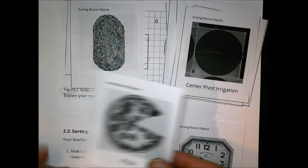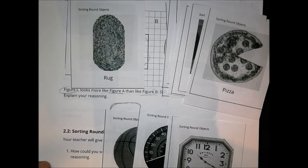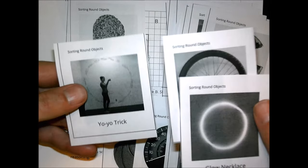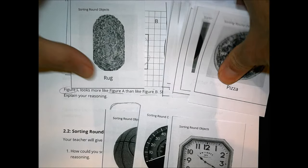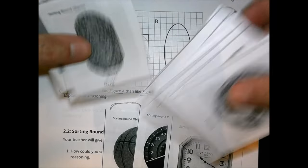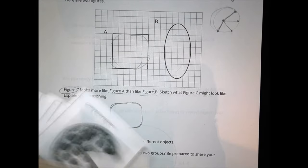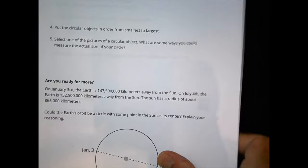A propeller going around creates a circle. The center pivot irrigation has a nice circle region. A clock is more rounded but also a little chopped off. A pizza — if it's a whole pizza — would be rounded. You also had a glow necklace, a bike wheel, and a yo-yo trick, each of which made a nice circle. You organized all those shapes based on how you saw them — circles, ovals, maybe some oblong things.